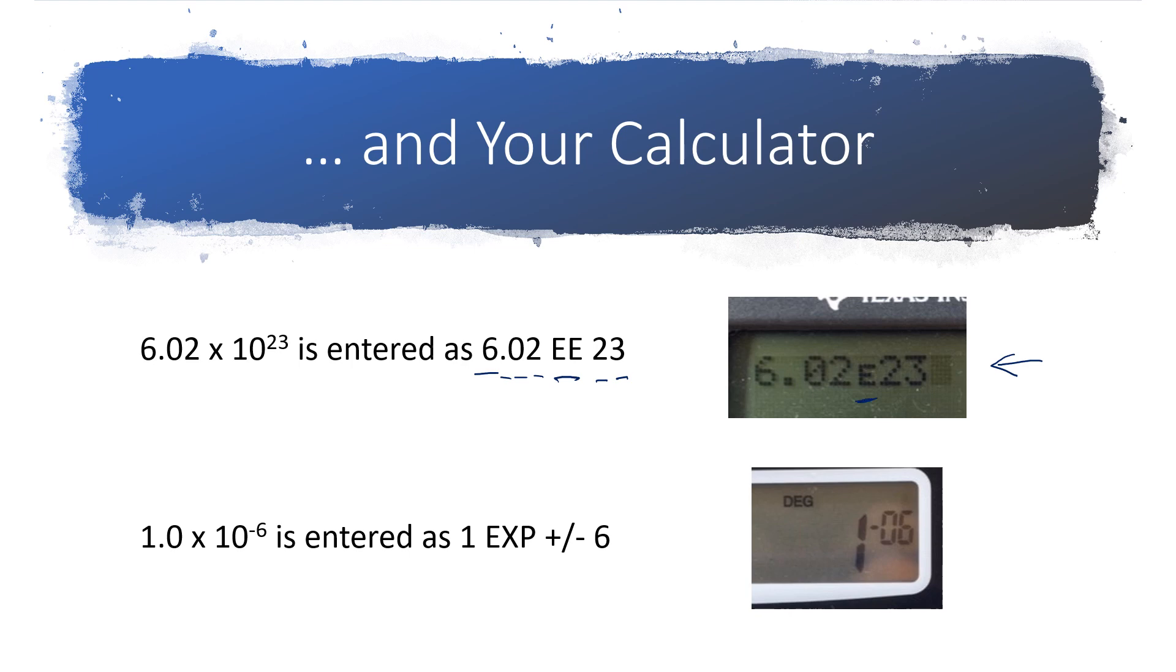And notice it's a capital E, right? We've got a capital E. If you start seeing a lowercase e, you've got a different function and other weird stuff is going on. So you want to make sure it's that capital E. On the TI scientific calculator, if you hit 6.02EE23, you're going to see what it looks like down here on this. That's not the number that was entered here.